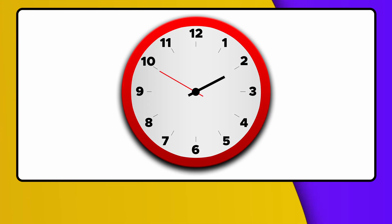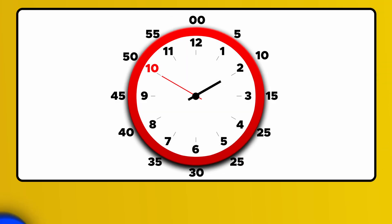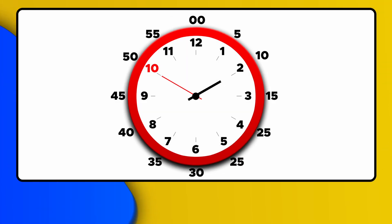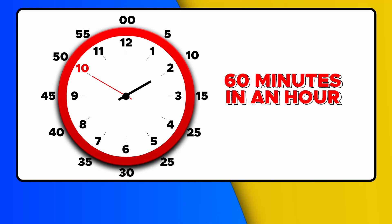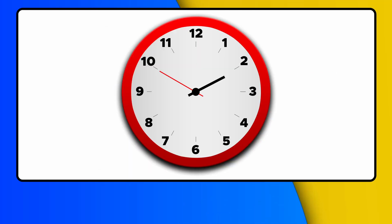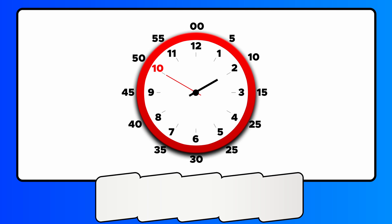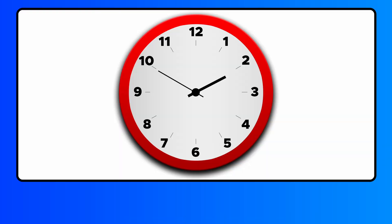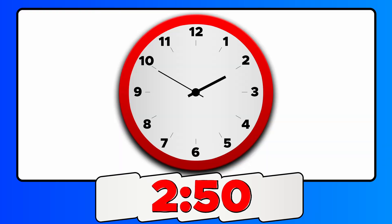Now let's look at the longer hand. It points to the minutes that have passed. There are 60 minutes in an hour. So if the longer hand is pointing at 10, that means 50 minutes have passed. The time would be 2:50.